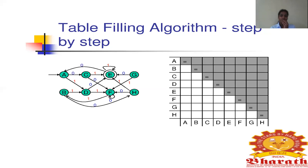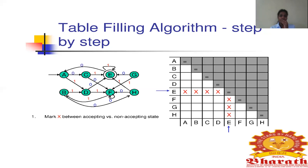Now we will see the first step. I am going to take the pairs of all the states with the accepting states. What are the accepting states here? Only one accepting state — E alone. So we pair A,E then B,E then C,E then D,E, and since E,E is equal we skip it and continue with E,F, E,G, and E,H. This means I am pairing all other states with the final state.